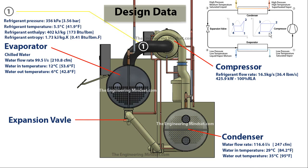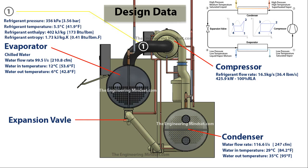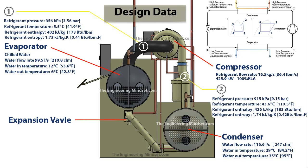We'll start at point one, marked here on the chart and on the chiller. At this point, the refrigerant pressure is 356 kilopascals (approximately 3.56 bar), the temperature is around 5.5°C (41.9°F), the refrigerant enthalpy is 402 kilojoules per kilogram (approximately 173 BTU per pound), and the entropy at that point is 1.73 kilojoules per kilogram per kelvin (approximately 0.41 BTU per pound per °F).